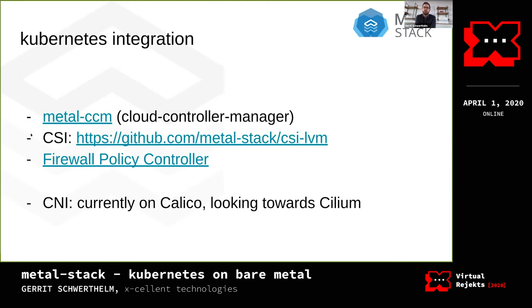For CNI, we currently use Gardener's default, which is Calico. But we're not sure that's the final solution — we've had some trouble with Calico around liveness and readiness probes because we run more pods than usual on most machines. We think Cilium would be a better fit because we could use direct routing mode and pod IPs would be automatically announced via FRR, which would just be a better fit for our infrastructure. So that's probably going to come.